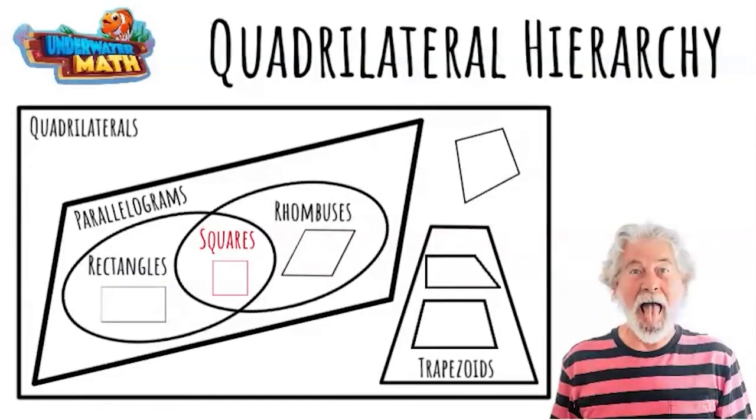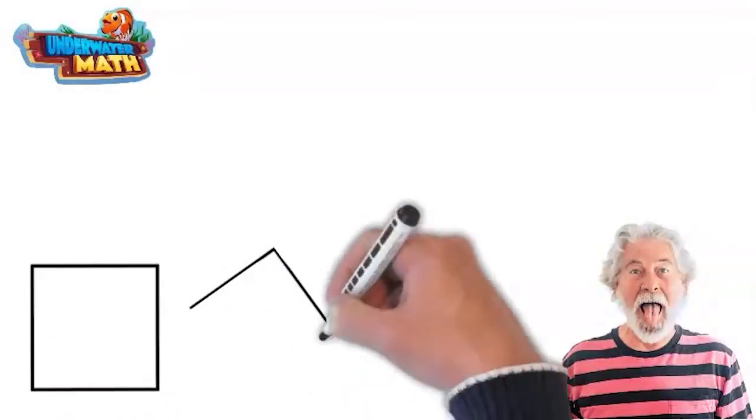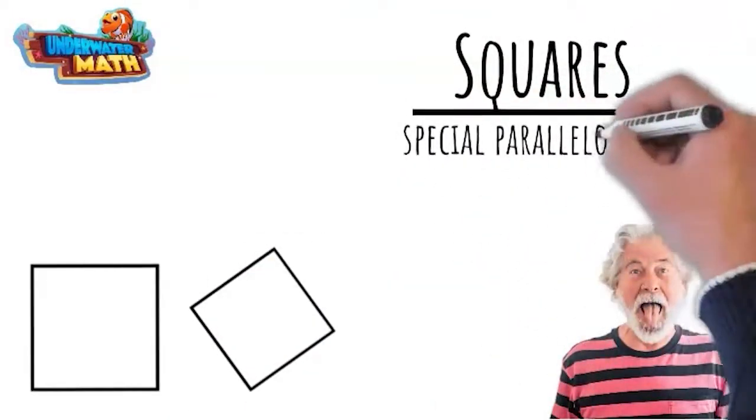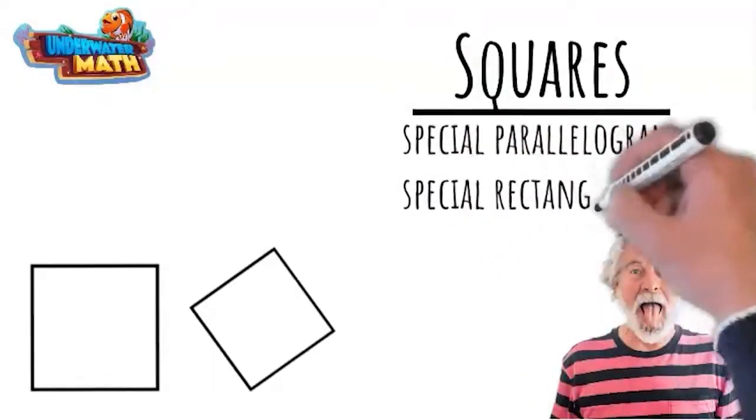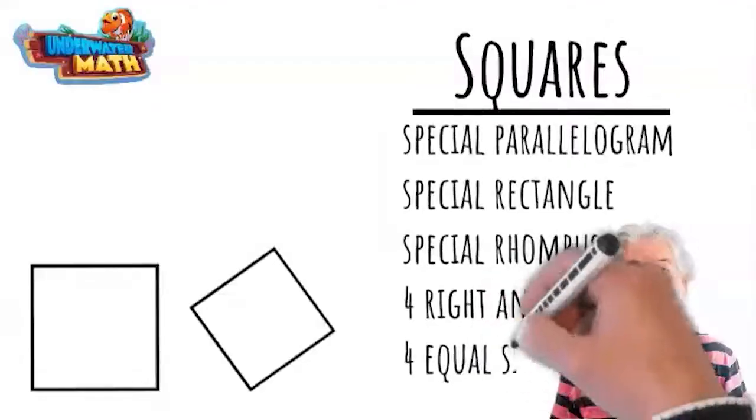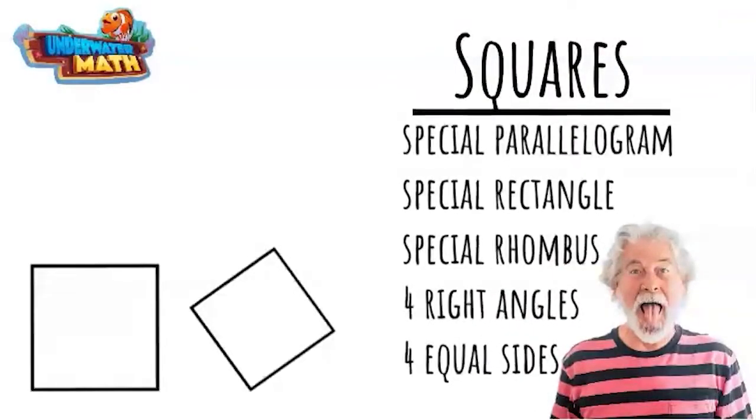Next up is what we would get if our rectangle and our rhombus got married and had a baby. It's called a square. It's a special rectangle. It's also a special rhombus. It has two pairs of parallel sides like a parallelogram. It has four right angles like its rectangle dad, and four equal sides like its rhombus mom.